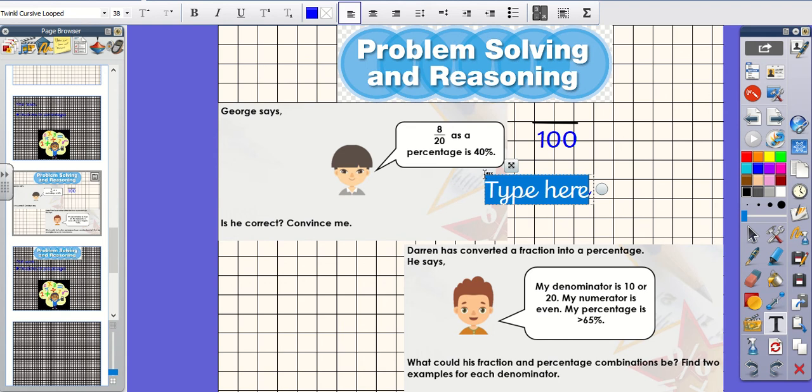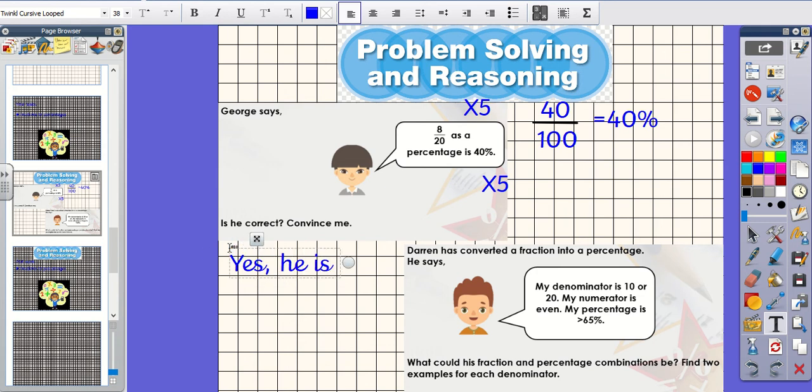20, 40, 60, 80, 100. We multiply by 5. So, whatever you do to the bottom, we do to the top. So, 8 times 5. 5, 10, 15, 20, 25, 30, 35, 40. 40 hundredths. So, I know that that would equal 40% because 100 is our denominator and that percentage means that it is out of 100. So, is he correct? Yes, he is correct. Because, he is correct because 8 twentieths equals 40 hundredths, which equals 40%.